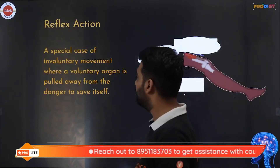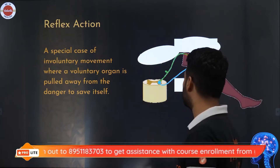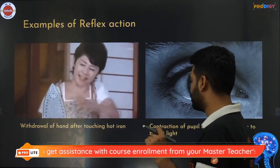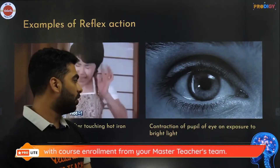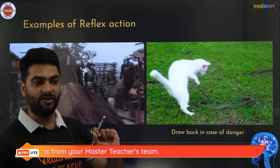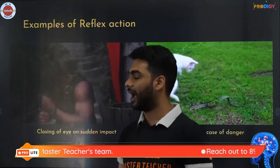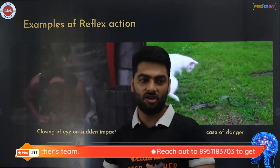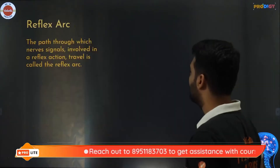The reflex arc is a special case of involuntary movement where a voluntary organ is pulled away from danger to save itself. Examples include withdrawal of the hand after touching a hot iron, contraction of the pupil on exposure to bright light, drawing back in case of danger, and closing of the eye on sudden impact. All of these are reflex actions.